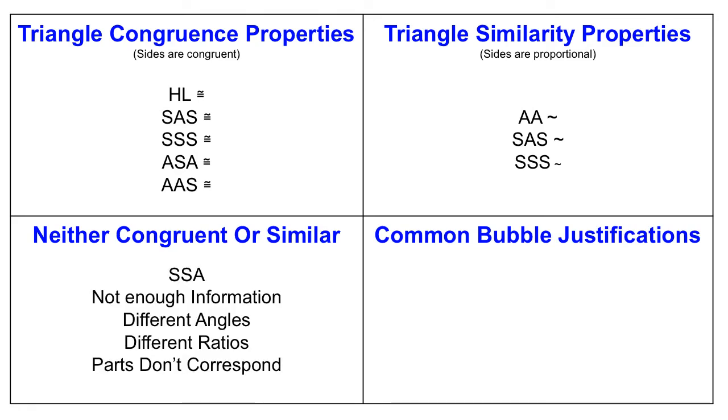It's also possible that you're going to try to prove that two triangles are either similar or congruent to each other, and it just won't work out. So there's a few different reasons for that. One of those reasons is side-side angle. It's possible that you don't have enough information to prove that the triangles are congruent or similar.